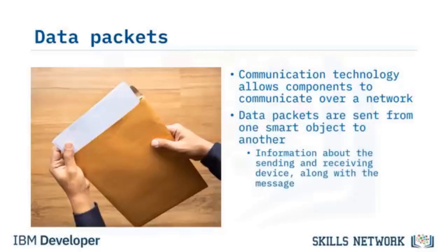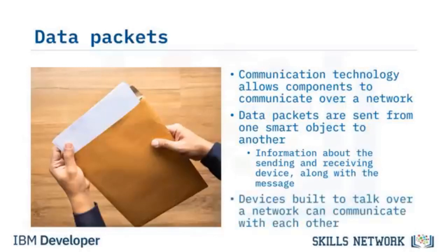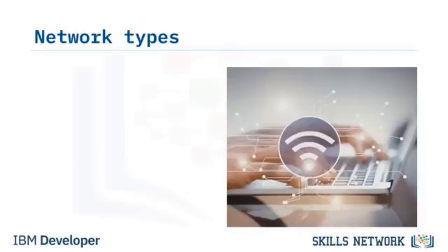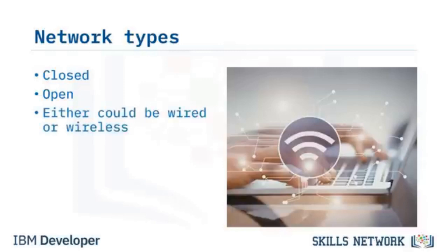Like papers in an envelope, each data packet contains information about the sending and receiving device, along with the message that needs to be transmitted, ensuring that only the designated device receives the information. A finite number of devices can be connected in a closed network, or to an unlimited number of devices over an open network such as the Internet. For example, your phone could be used to control your humidifier on your home network. Either type of network connection can be wired or wireless, such as Bluetooth.